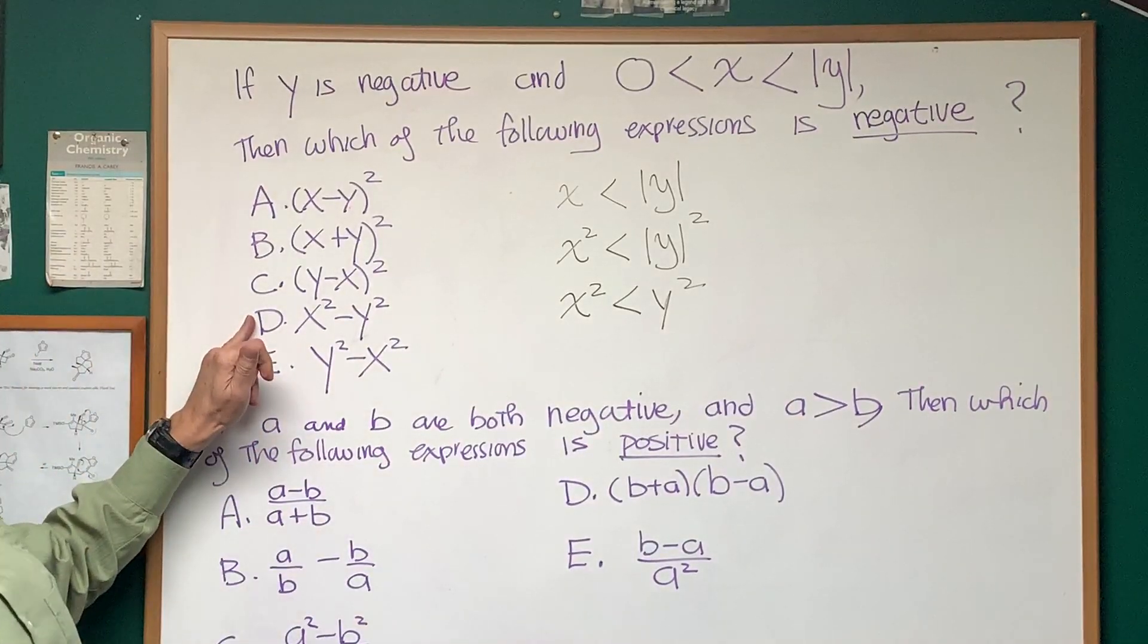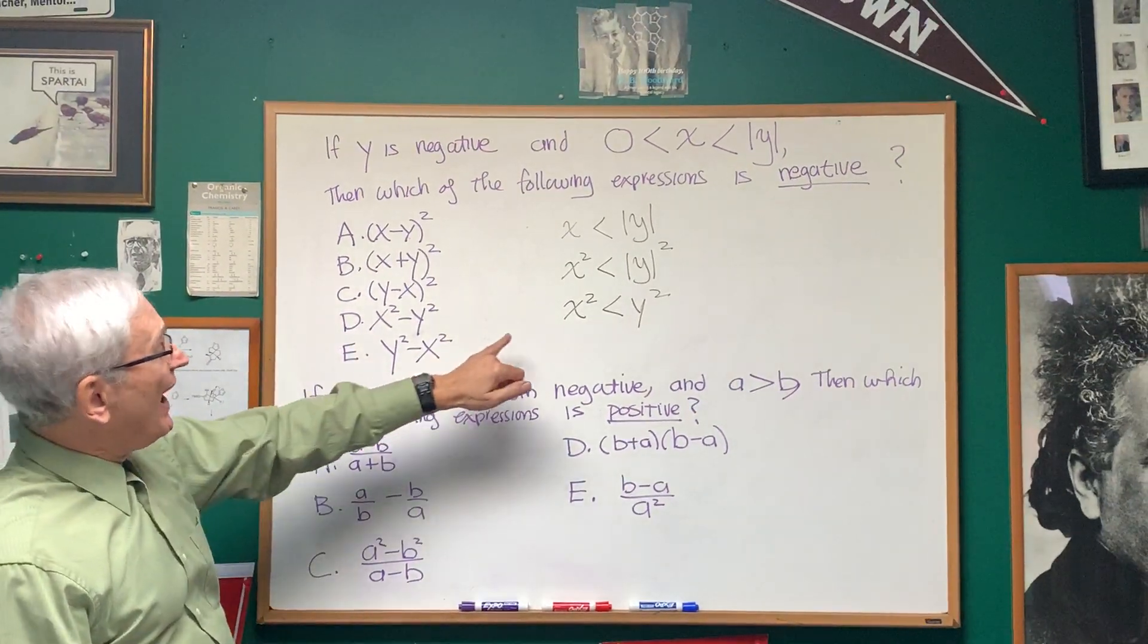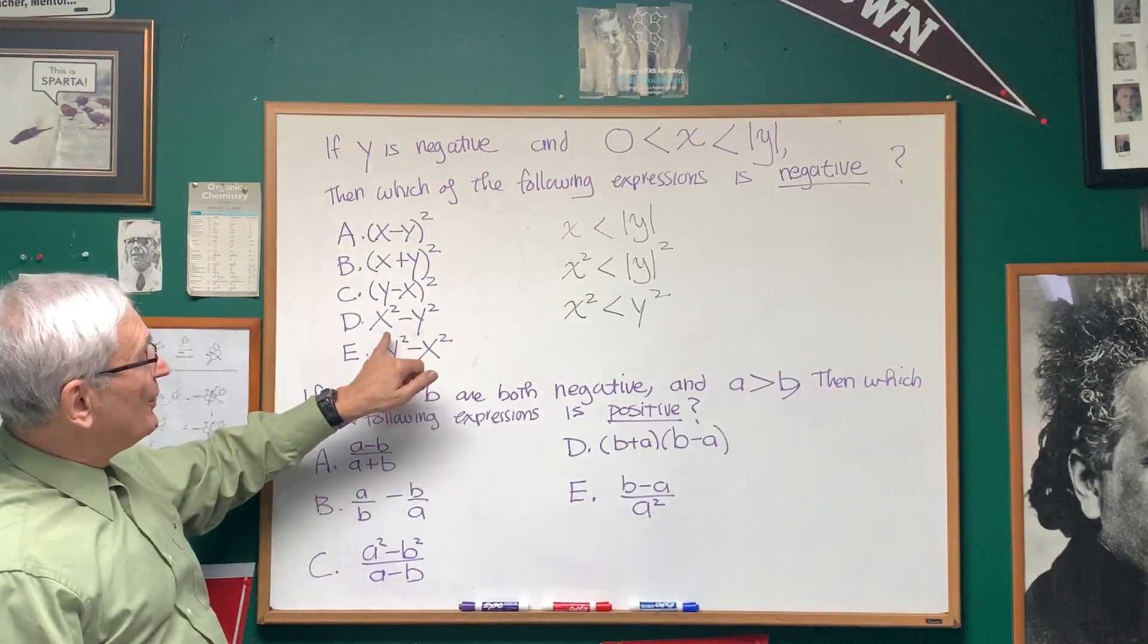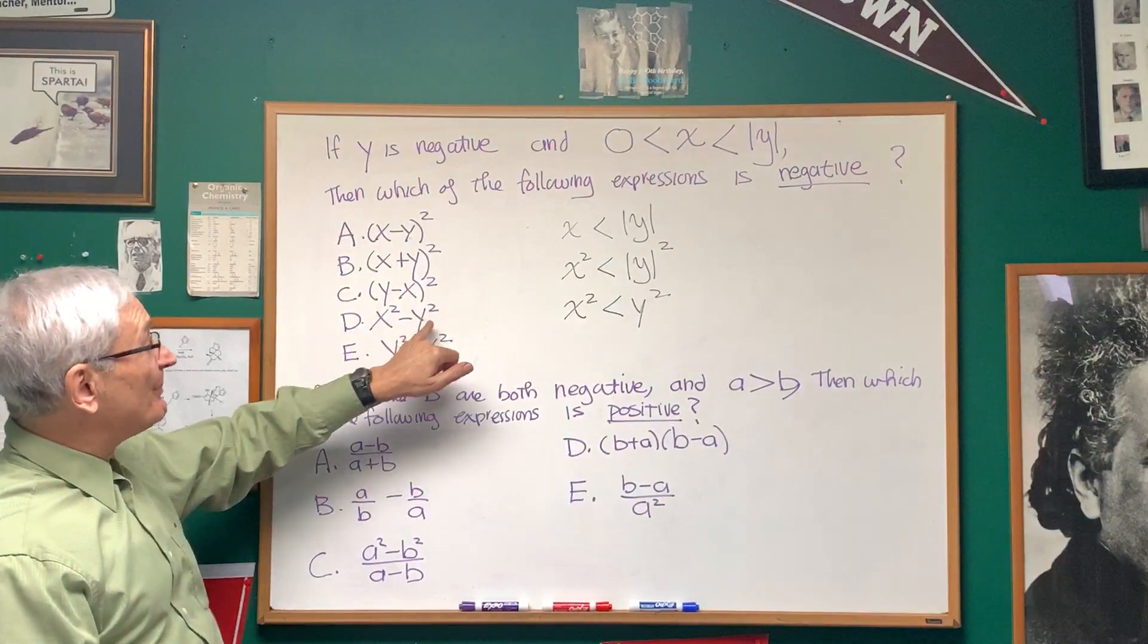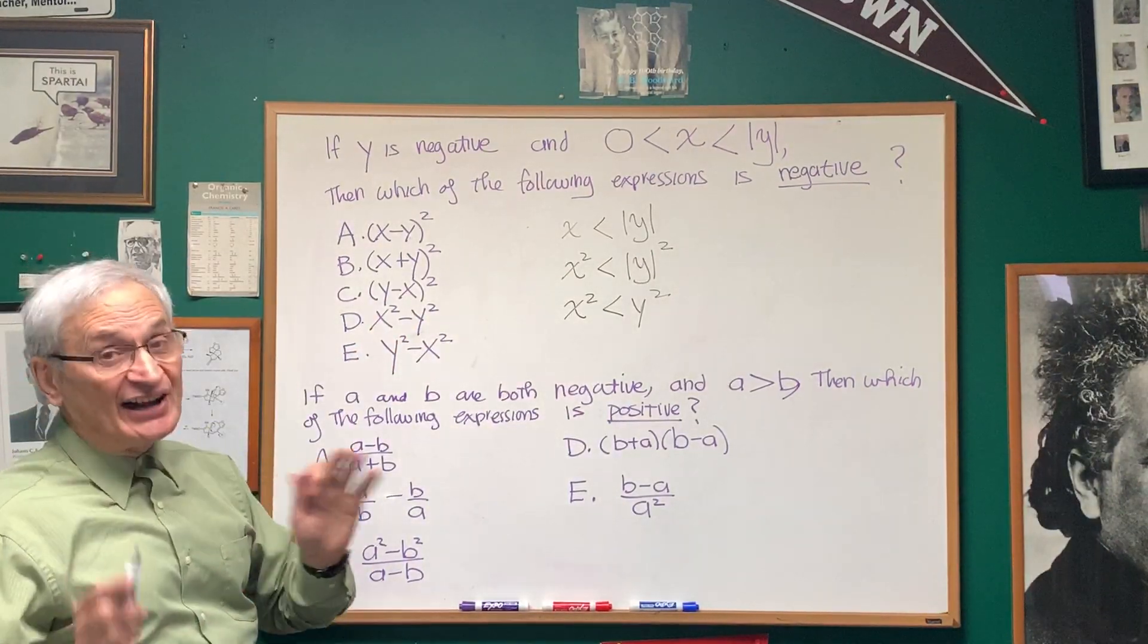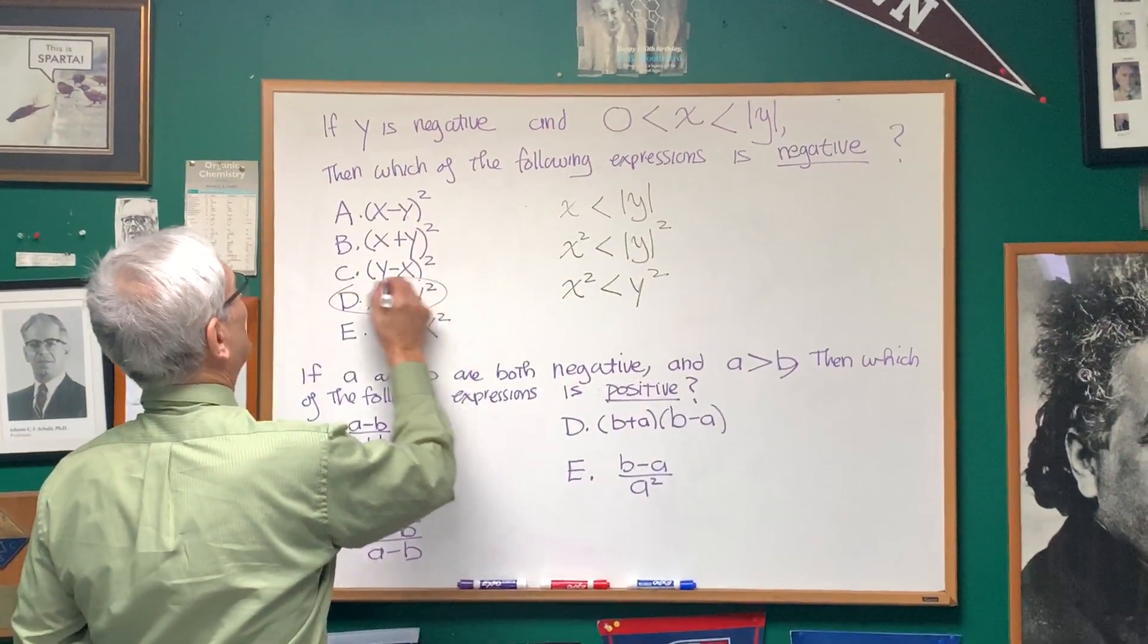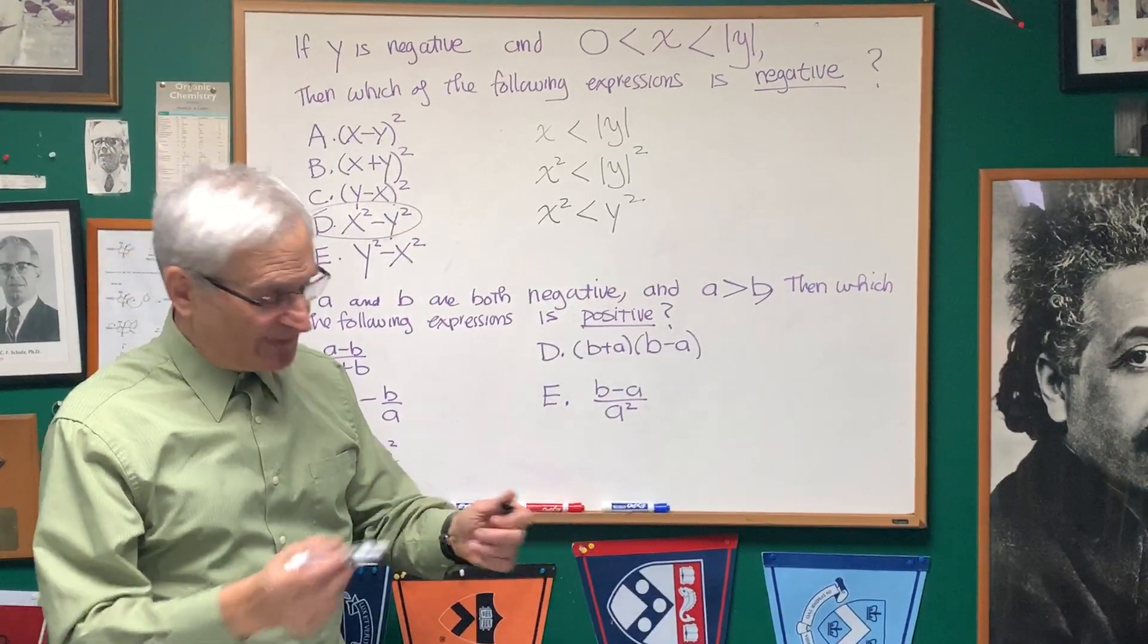Well, if my choices are limited to choice D and E, if x² is less than y², then I know that y²-x² is going to be positive, and x²-y², that's the quantity that's going to be negative, so it's choice D.